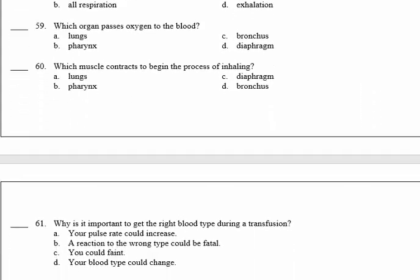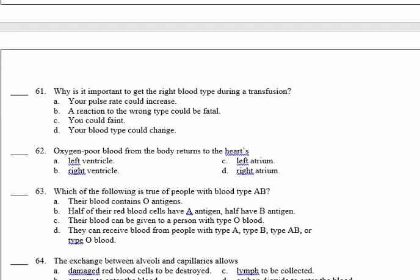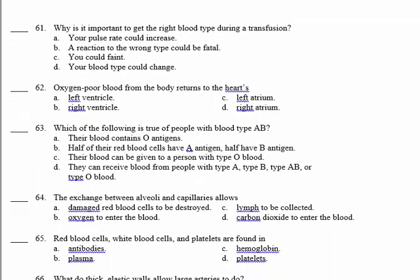Number 61: why is it important to get the right blood type during transfusion? During blood transfusion, if you do not get the right blood type, the blood you receive is going to clump with the blood you already have, and this could lead even to death. So 61, the answer is B — a reaction to the wrong type could be fatal.